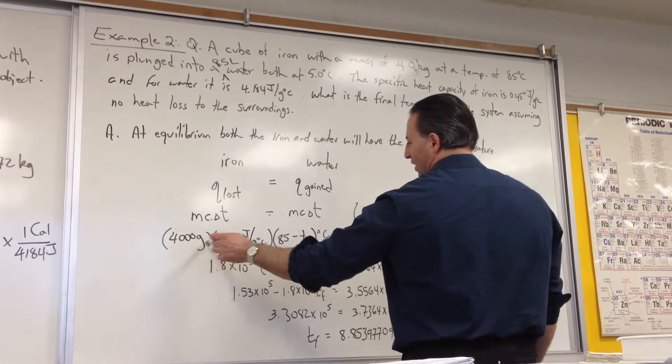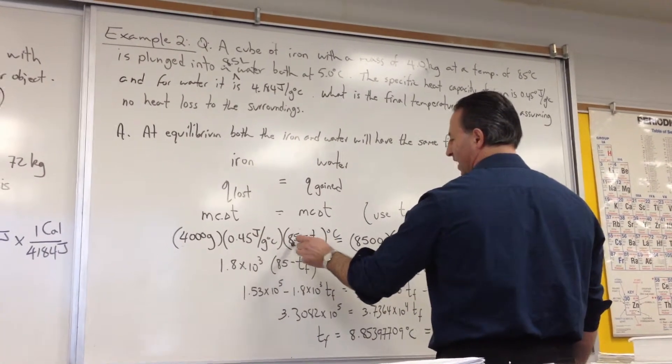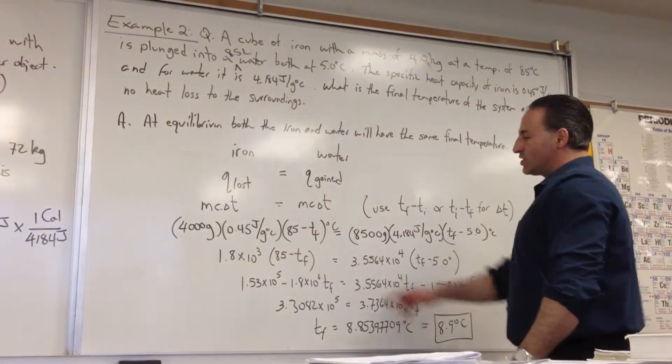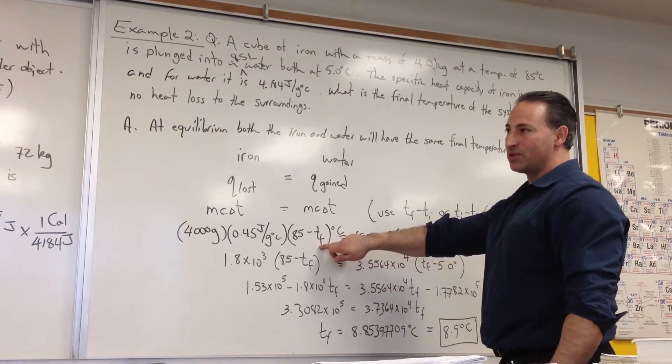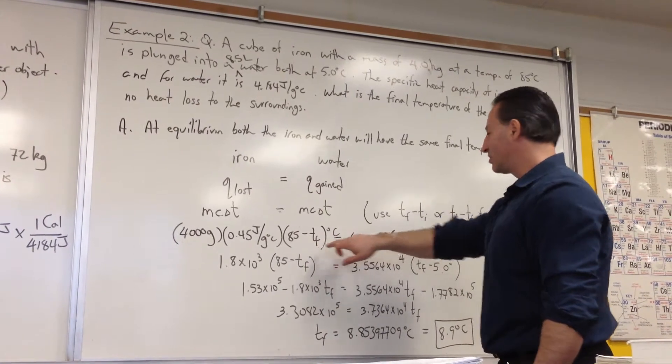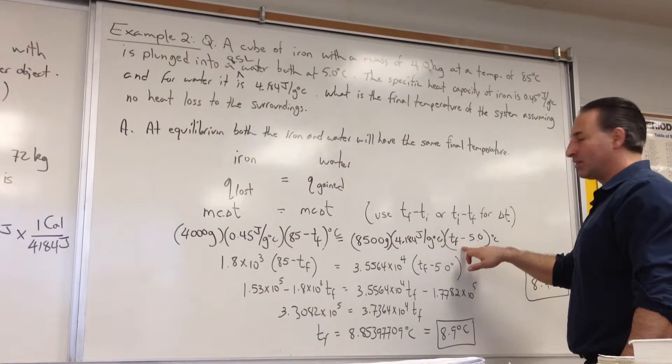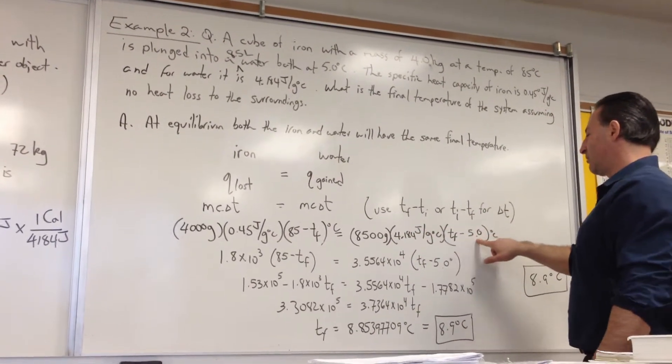The mass of the iron is 4000 grams, here's the heat capacity of iron, the temperature change will be 85 to whatever the final temperature is. This is the one common point between these two substances. They're both going to reach the same final temperature, because this will stop cooling down when it reaches the final temperature, and the water will stop warming up when they reach the same final temperature. Here's the mass of the water, heat capacity of the water, T final minus the initial.